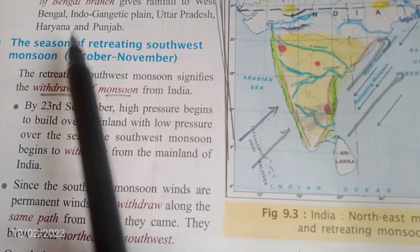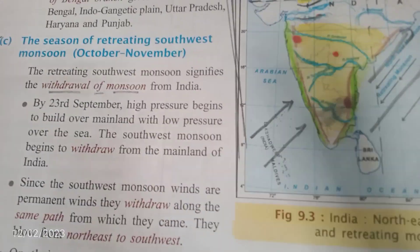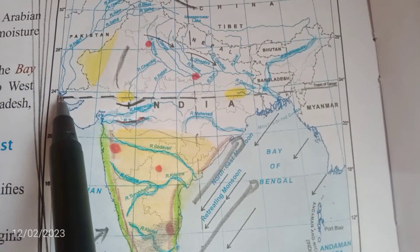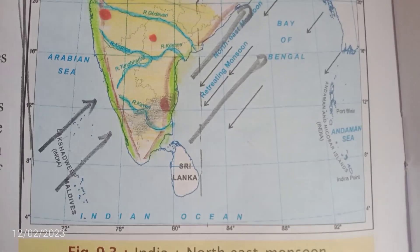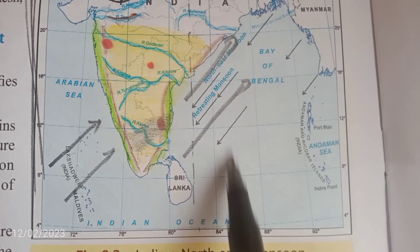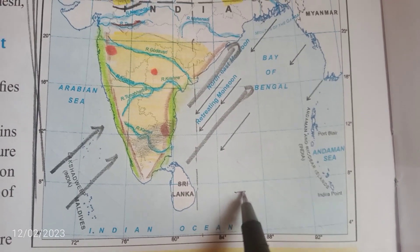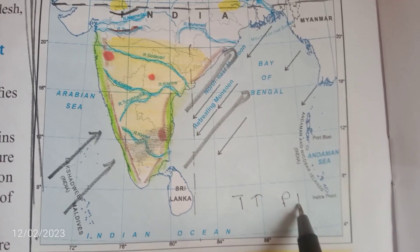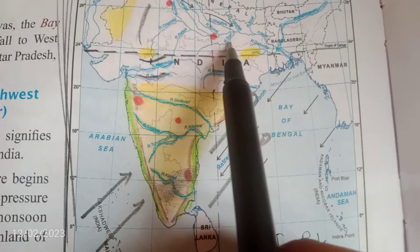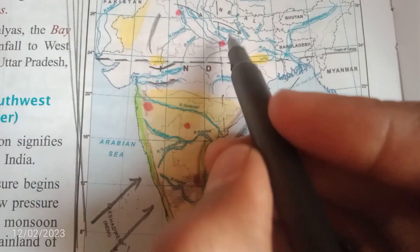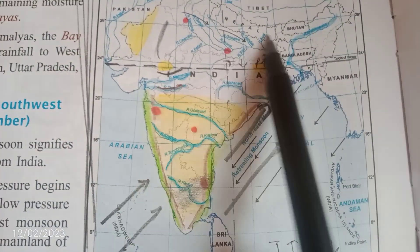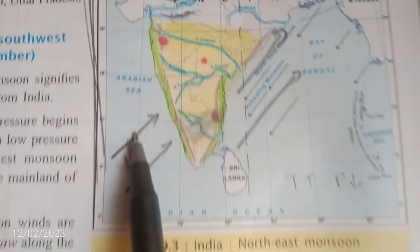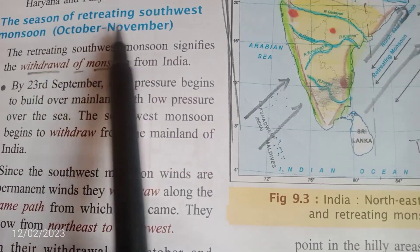This season of retreating southwest monsoon winds occurs from October to November. The Tropic of Cancer passes through India. When the sun is directly over the ocean bodies, the temperature of the ocean rises, pressure decreases over the ocean, but when the sun is not over the land, the temperature will be low and pressure will be high. So the wind blows from the land to the ocean — that is what we call the season of retreating southwest monsoon winds.